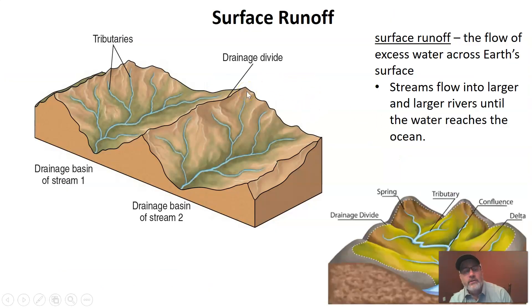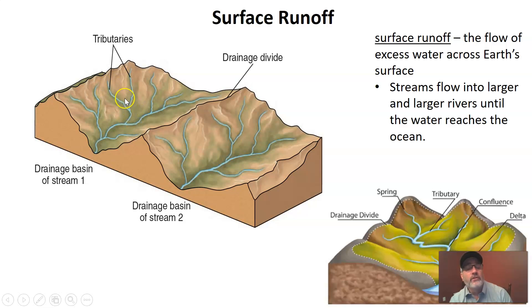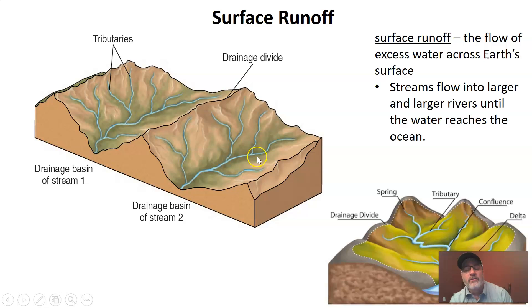If water does not get infiltrated and percolated and become part of the groundwater, it may just run off. Water that runs along or flows across our surface we call surface runoff. That looks like tiny little tributaries of water that join together, usually flowing downhill, and making larger tributaries. Essentially, surface runoff is excess water that is not absorbed — not infiltrated into the soil — and it just flows away across our surface. Think of things like rivers, streams, and springs.